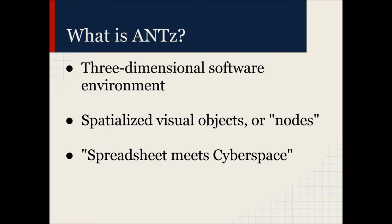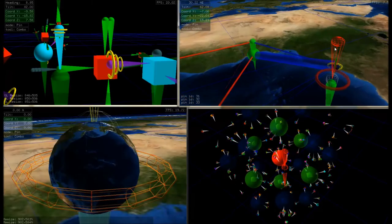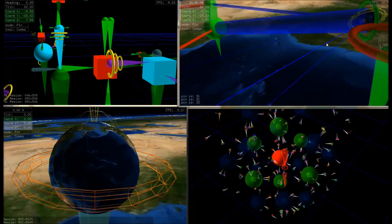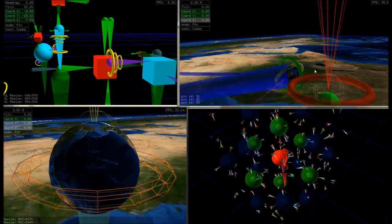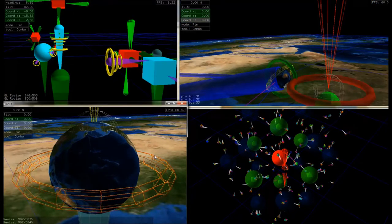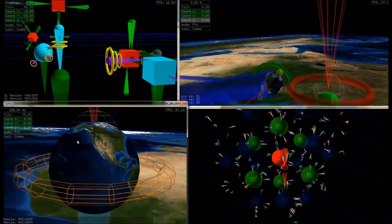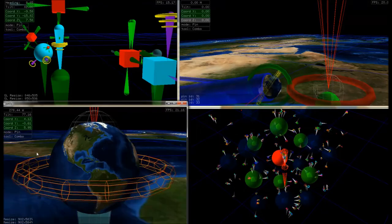So what is ANTS? ANTS is a three-dimensional software environment for viewing and interacting with complex data sets. Spatialized visual objects with variable shape, color, size, and texture enable the user to identify key patterns in their data. The visual environment of ANTS enables a more efficient mechanism for identifying visual patterns and relationships, and the software is capable of combining stored data with live sources for time-sensitive situations.